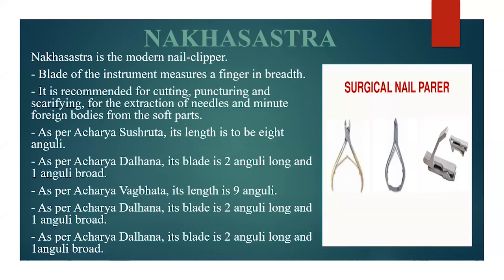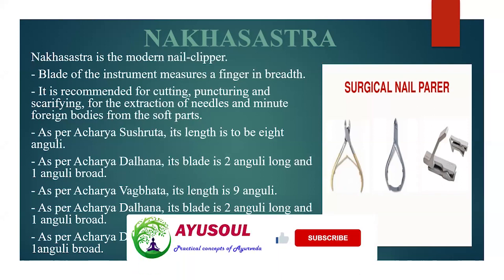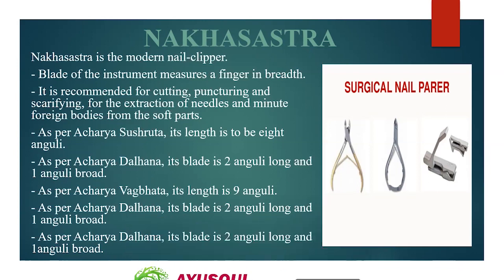Next is Nakshastra. It is equivalent to the modern nail clipper. The blade of the instrument measures a finger in breadth. It is recommended for cutting, puncturing, and scarifying, and for the extraction of needles and minute foreign bodies from the soft parts. As per Acharya Shushruta, its length must be 8 anguli. As per Acharya Dalhana, its blade is 2 anguli long and 1 anguli broad. As per Acharya Vagbhat, its length is 9 anguli.